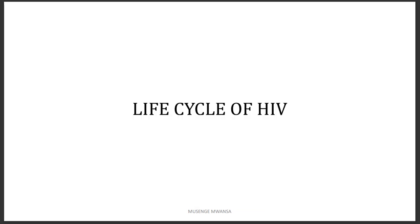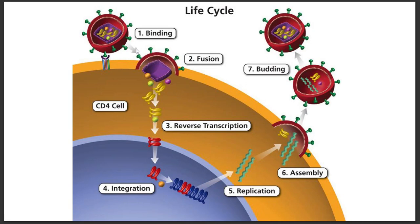Now let's talk about the life cycle of HIV. HIV first uses its GP120 to bind to CD4 receptors on the cell membrane. HIV can attack either macrophages or T lymphocytes. The coreceptors on macrophages are called CCR5, and the coreceptors on T cells are called CXCR4.